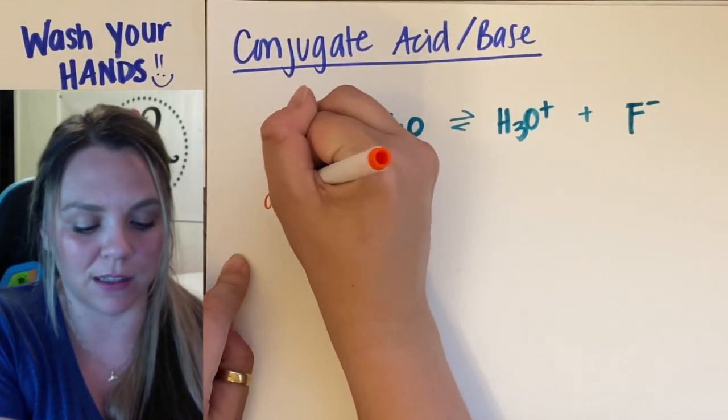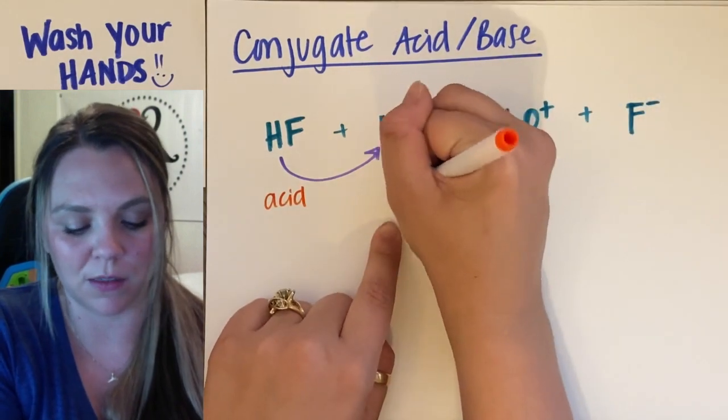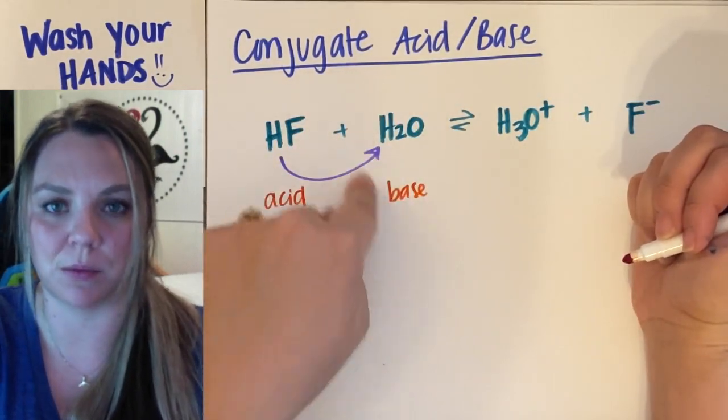And let's do that. So HF is my acid. Water, in this case, is my base. Hydrogen donor, hydrogen acceptor.